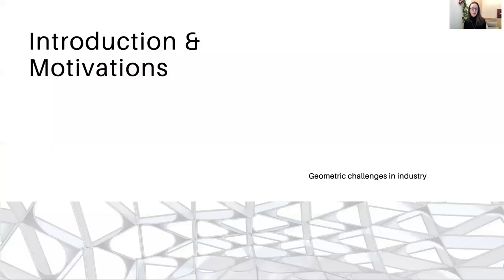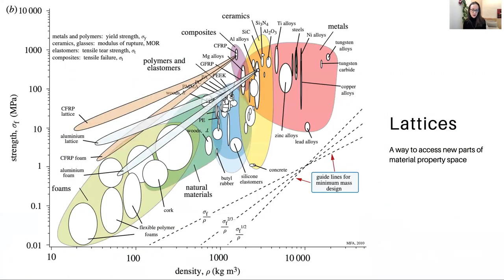Before I begin, I would like to motivate the topic of lattice geometry by considering the ways that lattice geometry is used in industrial applications. This diagram is called a material property diagram and it represents material property space. We can see here we have strength versus density, which are two properties of materials we might care about. On the diagram are all kinds of materials, everything from wood to glass, concrete, polymers, metals and so on.